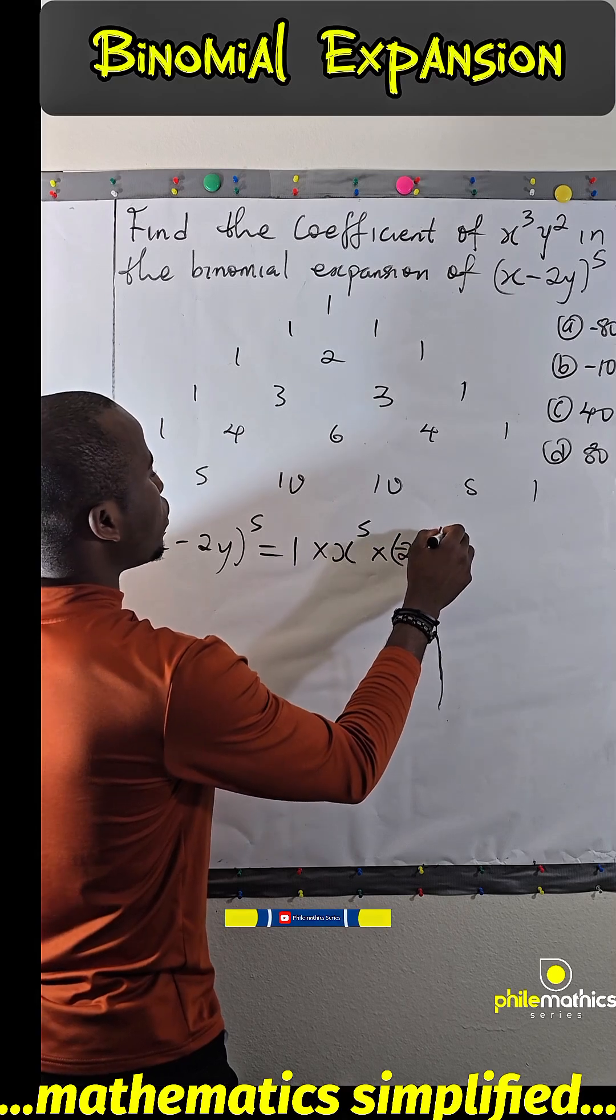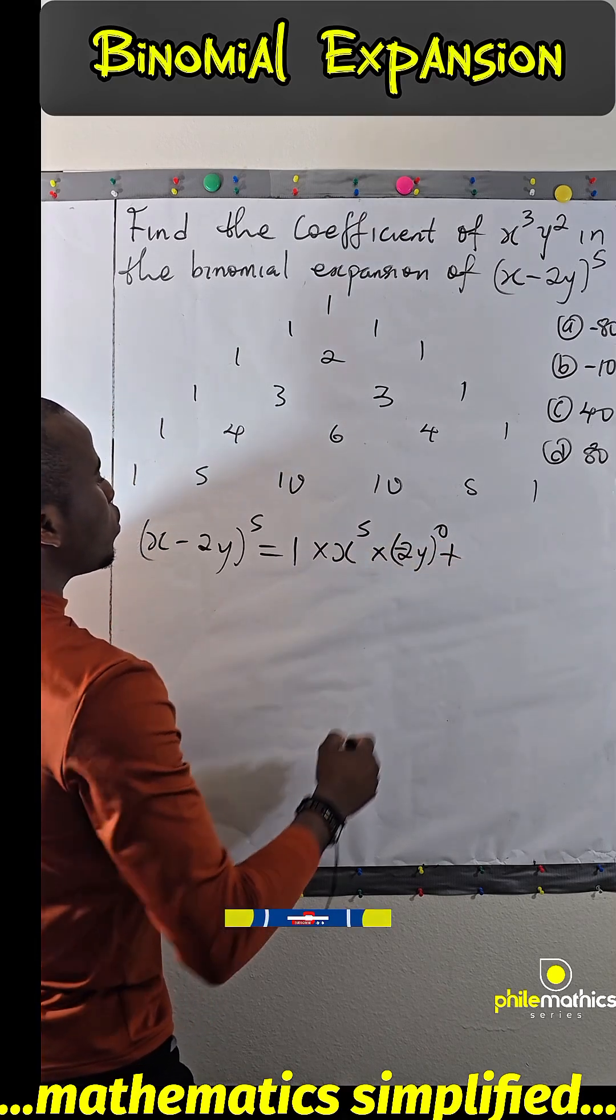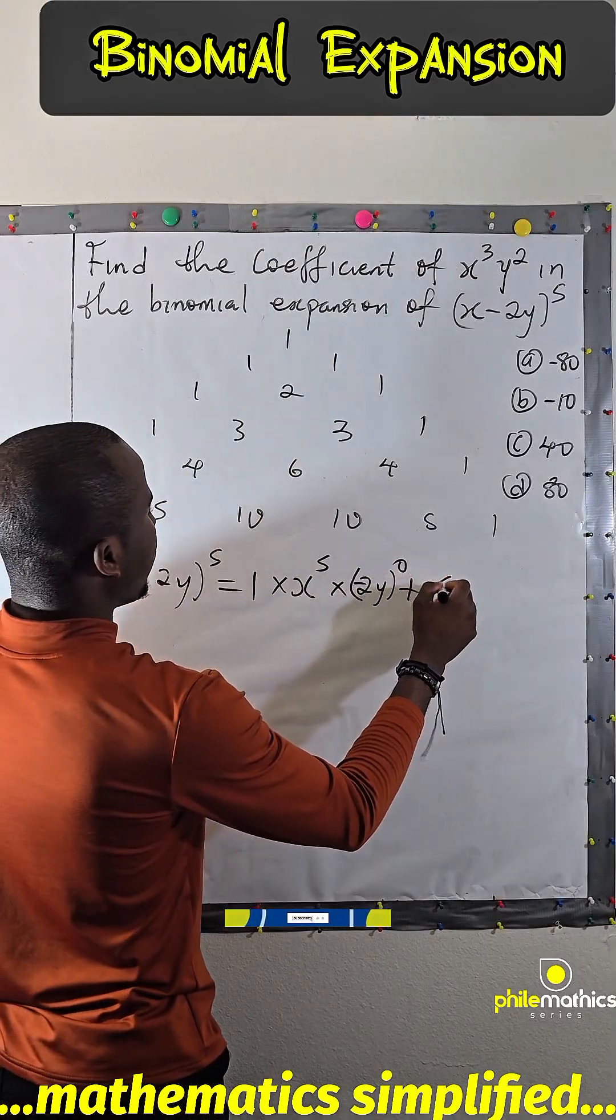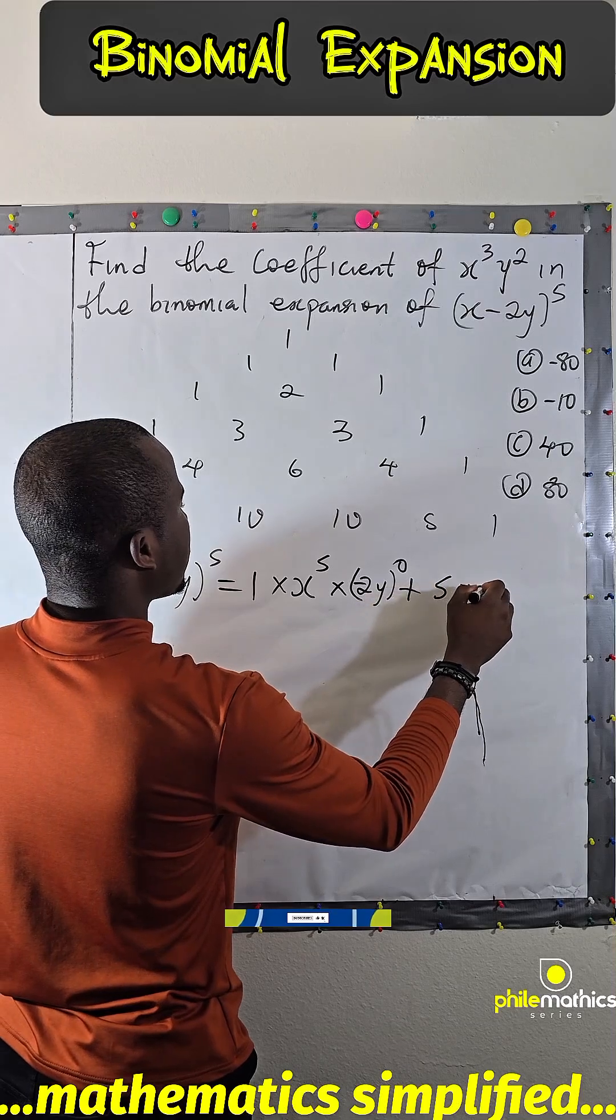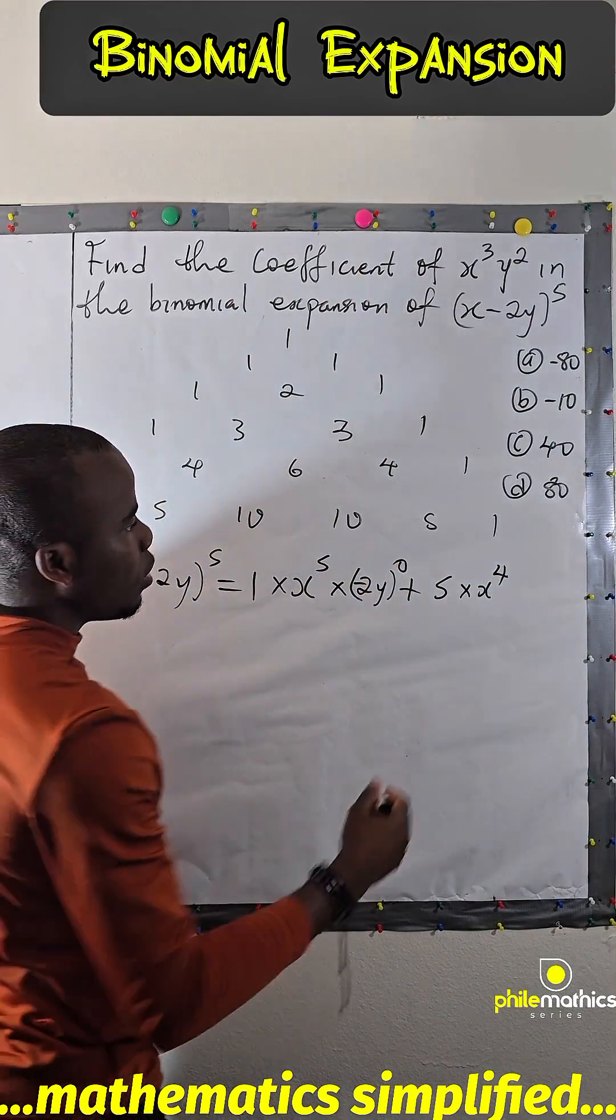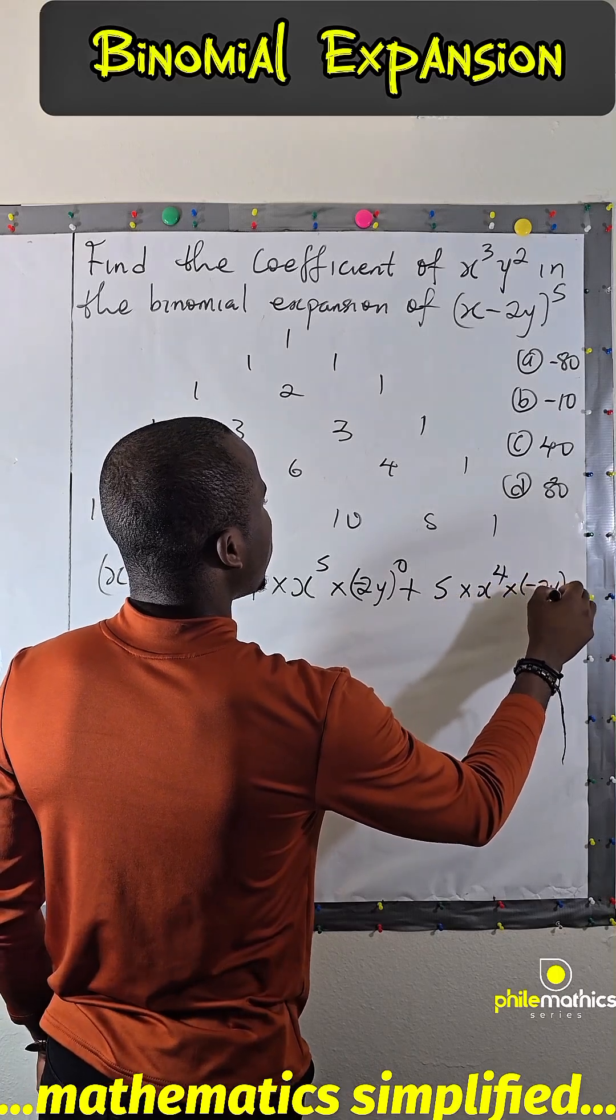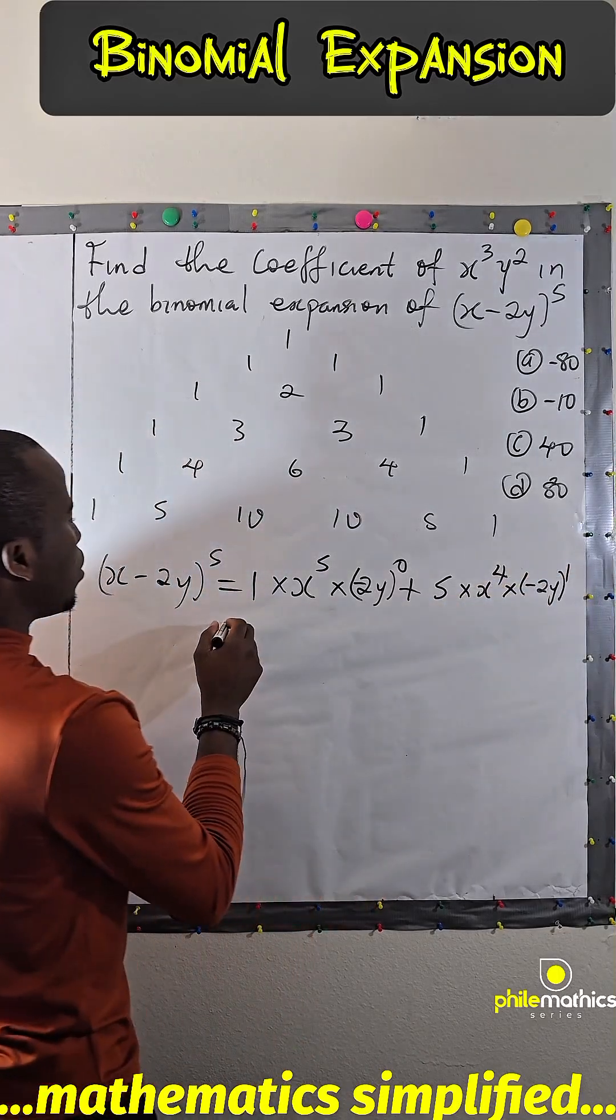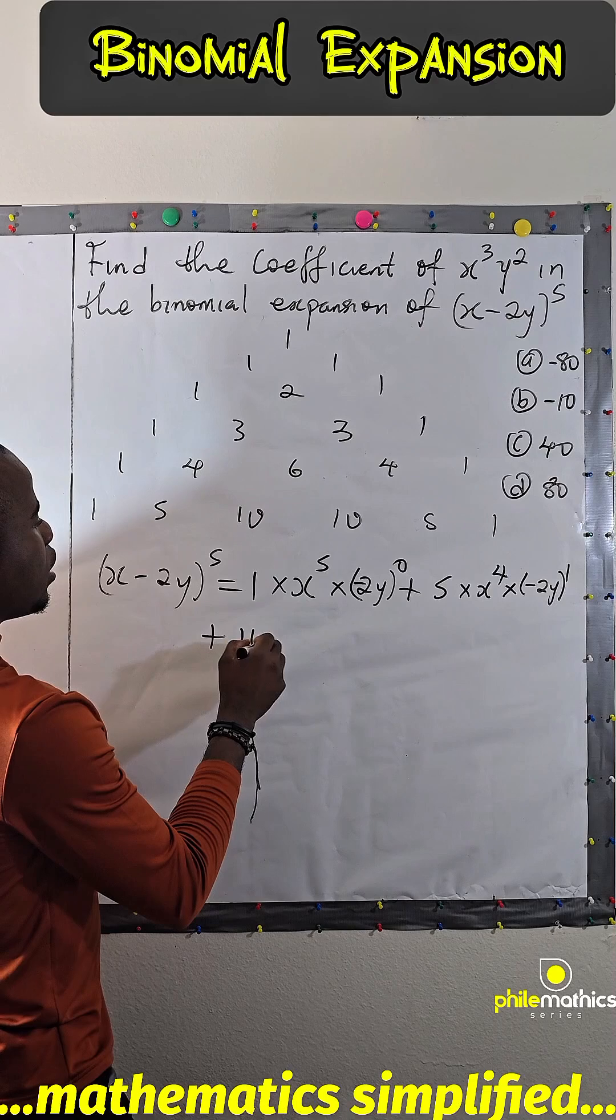Plus coefficient 5 times x to power 4, because this must sum to 5, times (-2y) to power 1. Plus the next coefficient 10 times x to power 3 times (-2y) to power 2.